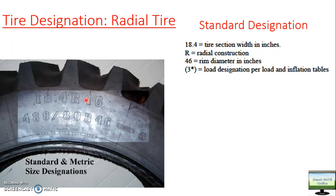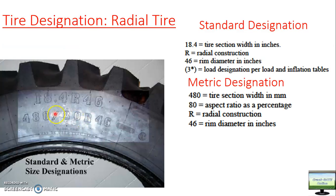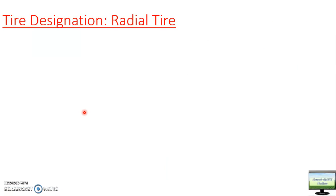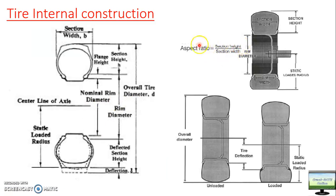Below the standard designation is the metric method: 480/80 R46. Here 480 is the tire section width in mm, 80 is the aspect ratio, R signifies radial, and 46 is the rim diameter in inches. The aspect ratio is section height divided by section width — it is a dimensionless number usually expressed as a percentage, typically lying between 75% and 80% depending on the tire and manufacturer. This is an important ratio that could be asked in your exam.